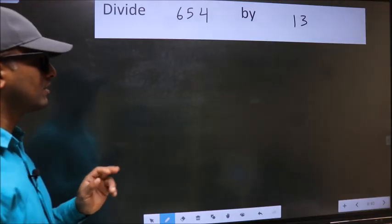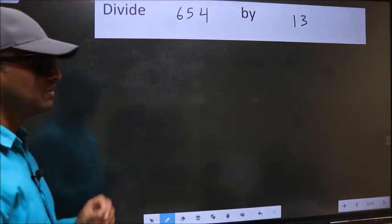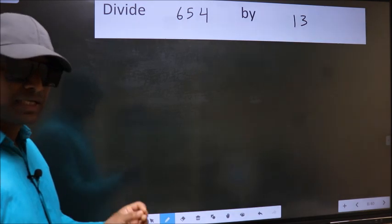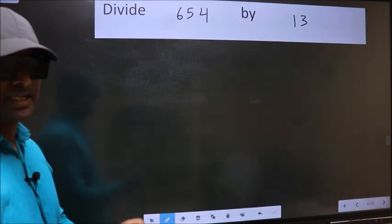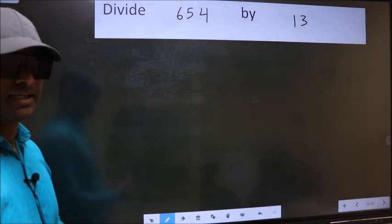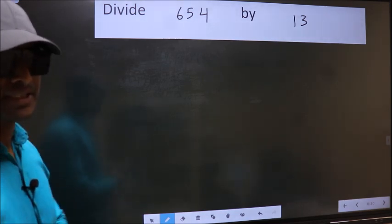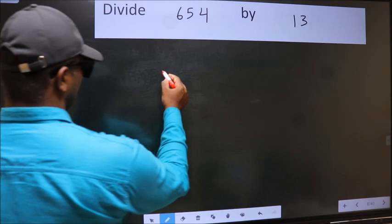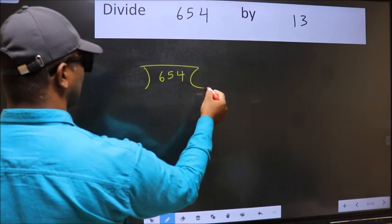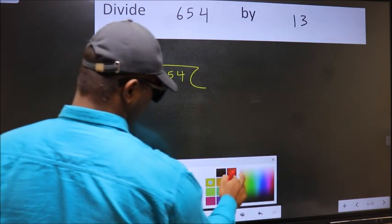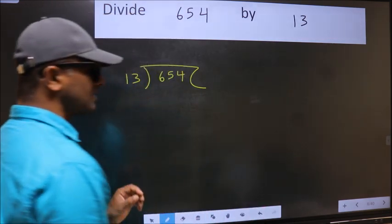Divide 654 by 13. While doing this division, many make a mistake. What is the mistake that they do? I will let you know, but before that we should frame it in this way: 654 and 13 here.